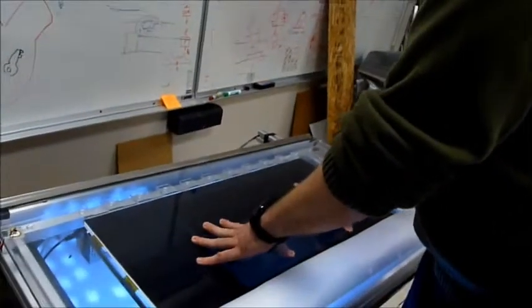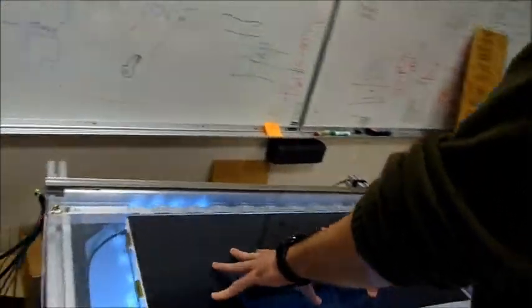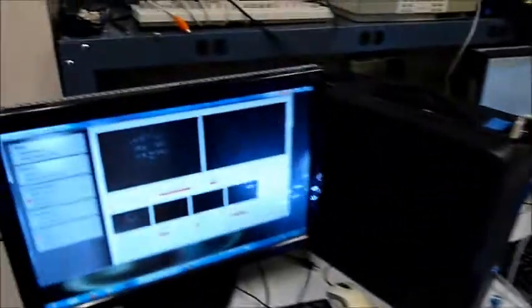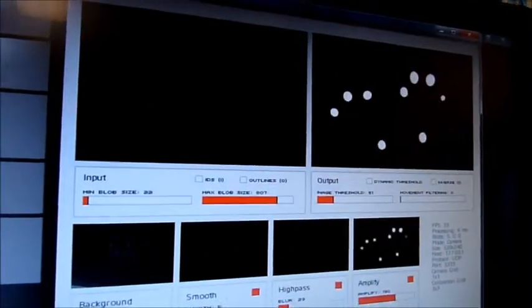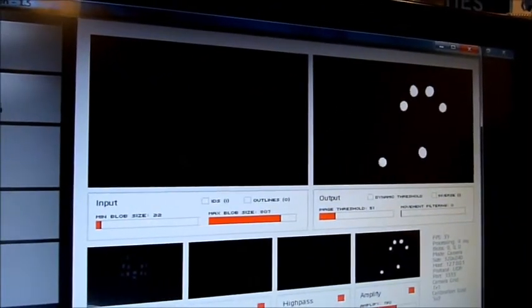Now, on the screen we're displaying right now community core vision, which is showing our blob detection. So you can see it on that screen. And what that does is it shows that my fingers are clearly showing up. So those are the optical sensors.